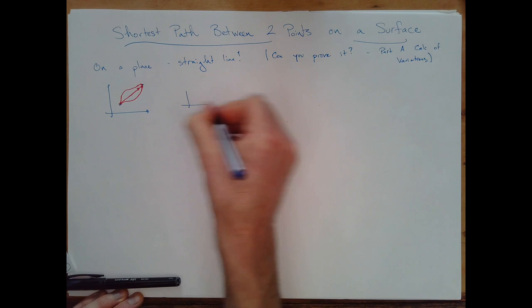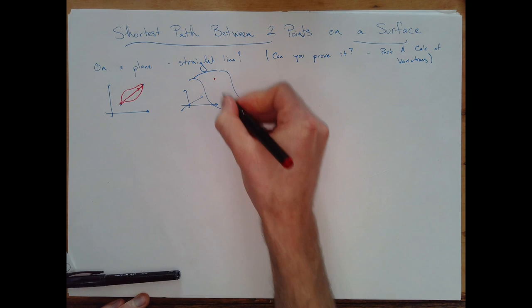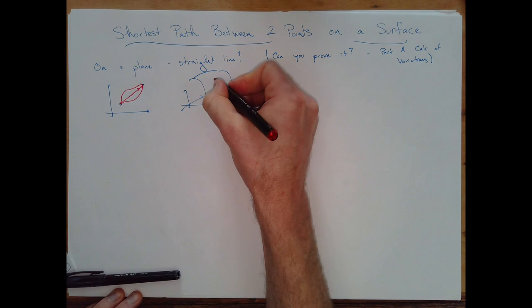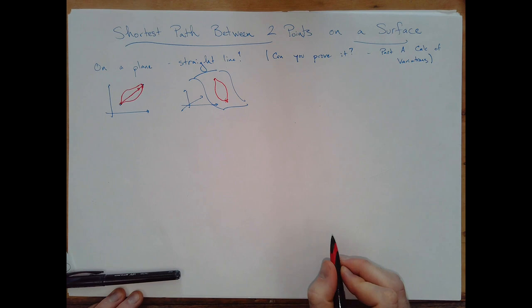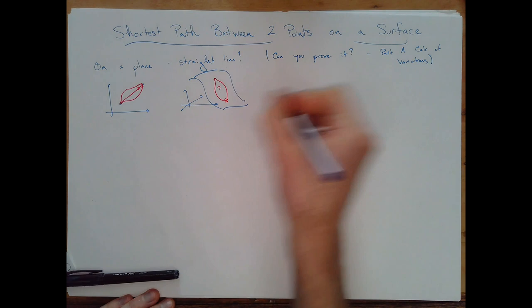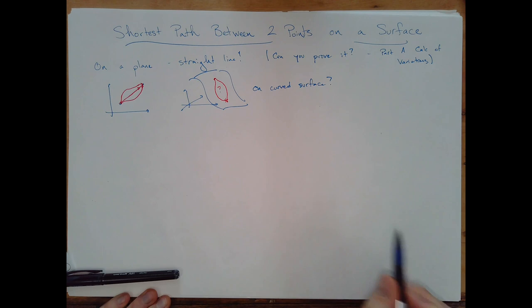What if I have a non-flat surface, and I want to take the shortest path between two points on the surface, where I require that the entire path lives on the surface? Here, a straight line is not even a possibility unless it's flat. It's very much less clear what the answer is on a curved surface. The terminology for that shortest path is called a geodesic.